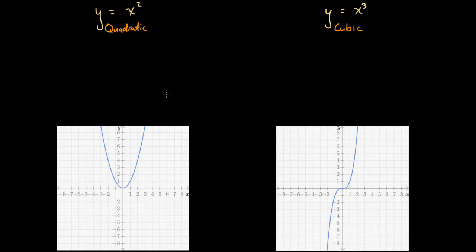Another feature we may notice is that on the right-hand side, for all values greater than x equals one, the y values increase at a slower rate for the quadratic than for the cubic function. For instance, at x equals two, the quadratic gives a y value of four, whereas the cubic gives a y value of eight, suggesting the cubic's y values increase much more rapidly after x equals one.